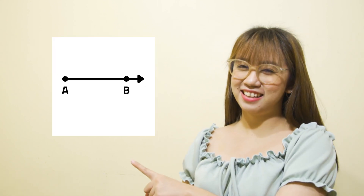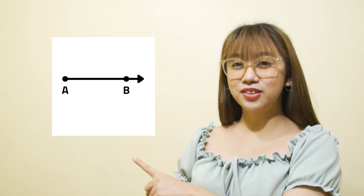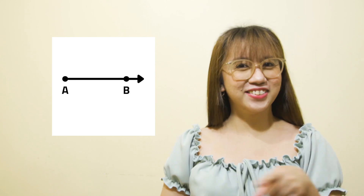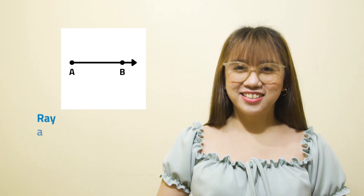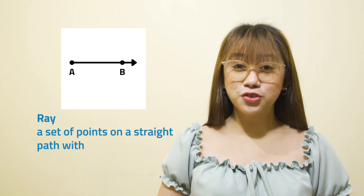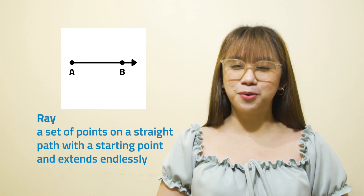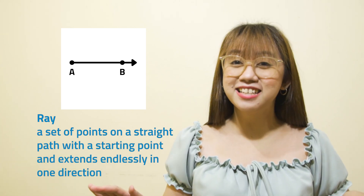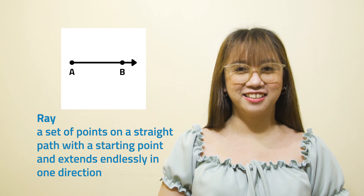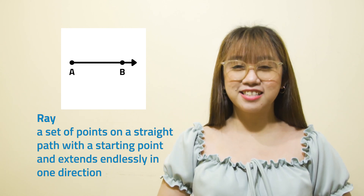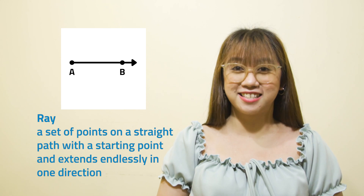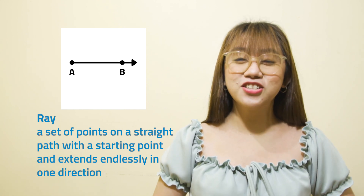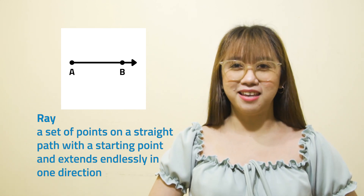Now, take a look at this. Do you know what this is called? This is a ray. A ray is a set of points on a straight path with a starting point and extends endlessly in one direction. It is named with its endpoint and by the point on which it is extending. The illustration is ray AB.